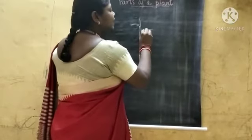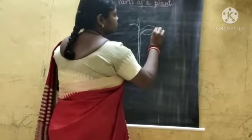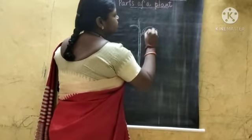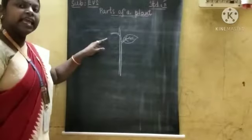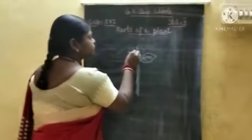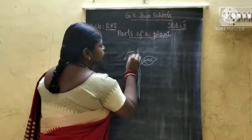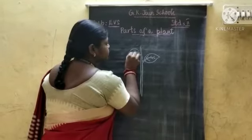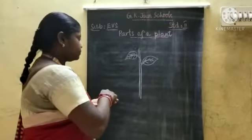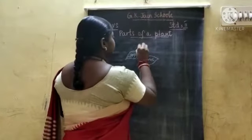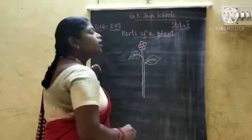Now I am going to draw a leaf. One leaf is there, you should say it as leaf. If it is more than one, you have to say it as leaves. I can draw the leaves. It is green in color. Now I am going to draw a flower. This is a flower.